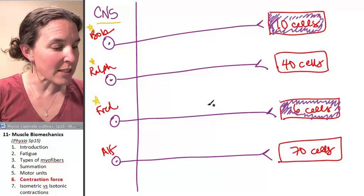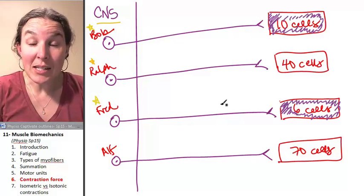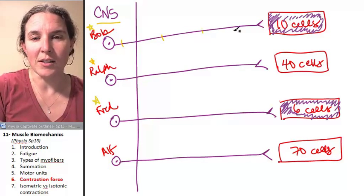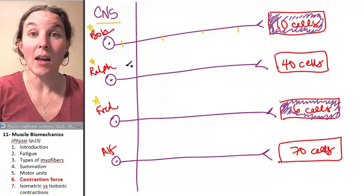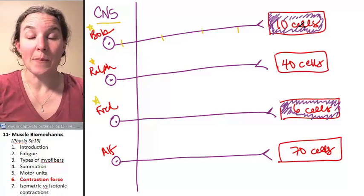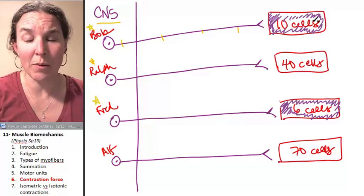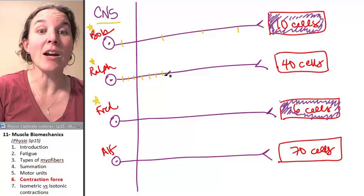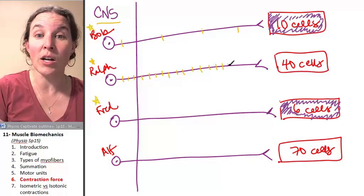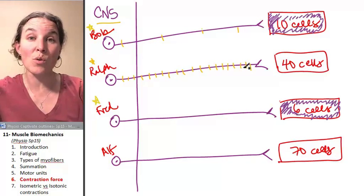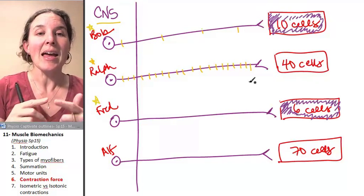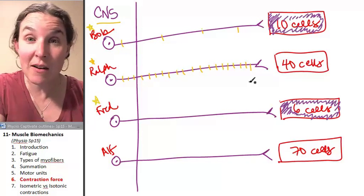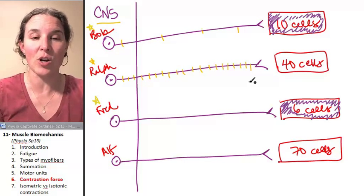The central nervous system can control how quickly the message is sent. It can say, okay, Bob, you're going to fire at this rate. I'm just drawing this on here because what we know is that at that pace, we probably won't reach tetanus with my 10 cells at the rate that Bob is firing. But you know what, Ralph? You are going to fire quicker and therefore all of your 40 cells over there are going to reach sustained, smooth, steady tetanus because by changing the message, the speed of the message, we can change the kind of contraction that we get.